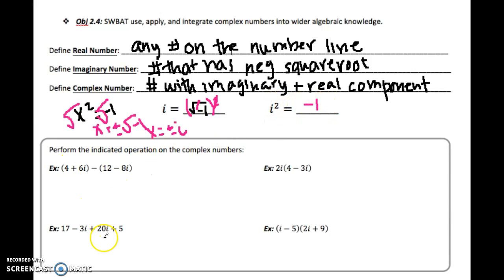So let's do a few of these problems here, where all it's asking us to do is perform the indicated operations on the complex numbers. All right, so 4 plus 6i, that's an example of a complex number because we have a real part, what I underlined in black, and then an imaginary part, which I underlined in pink. We're subtracting that from another complex number where we have a real part, which is 12, and an imaginary part, which is negative 8i.